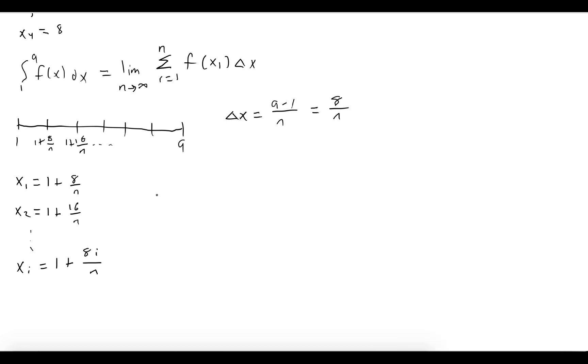So now what we need to do is evaluate our function at this sample point. And we have 6(1 + 8i/n)^5. And we're done. Let's put it all together now.